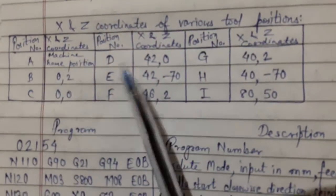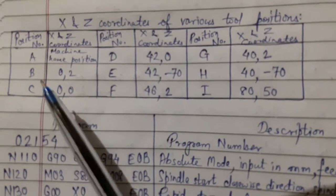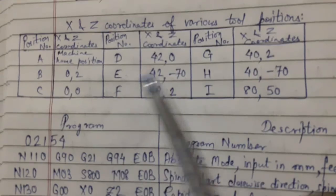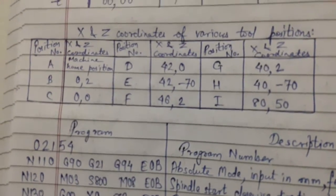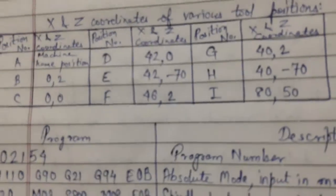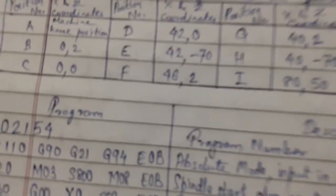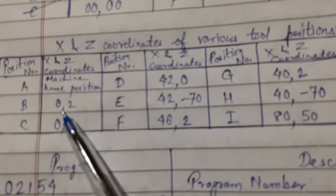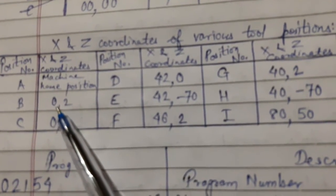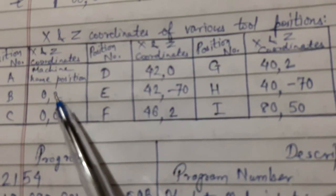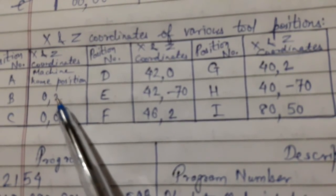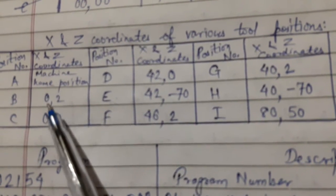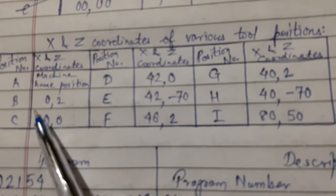Now let us form a tabulation of all the positions A through I. Position A is the machine home position. Position B is where the tool is 2 mm away from the workpiece face — X is 0 and Z is 2 mm. Position C is X equal to 0 and Z equal to 0, meaning the tool is right at the face center.